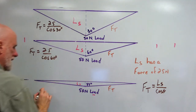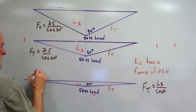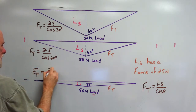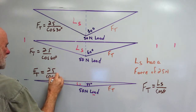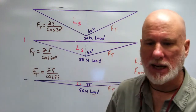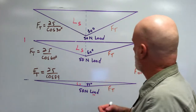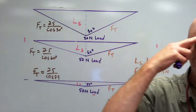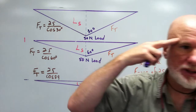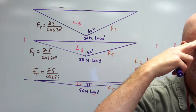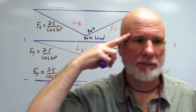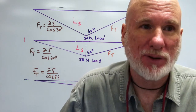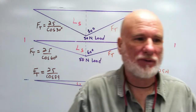Then this one down here: F T equals 25 over cosine 89. So what is F T going to be for each of these values? What is 25 divided by cosine 30? They're calculating. They're doing very well. As I always love to say, their calculators are more powerful than the one that landed a man on the moon.